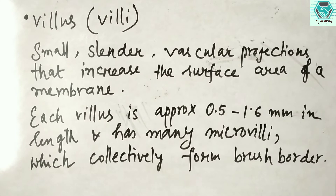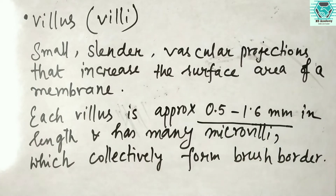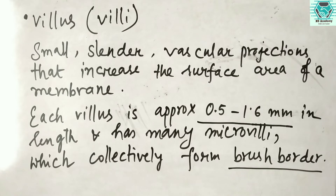The villi (singular: villus) are small, slender vascular projections that increase the surface area of the membrane in the small intestine. Each villus is approximately 0.5 to 1.6 mm in length and has many microvilli, which collectively form the brush border. Each microvillus is about 1.6 mm in length — around 1000 times shorter than a single villus. The villi help in the absorption process of the intestine.